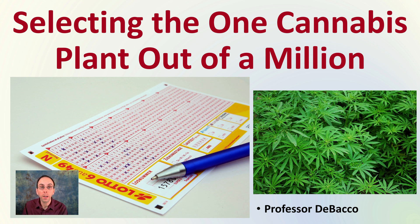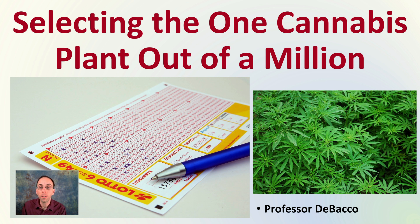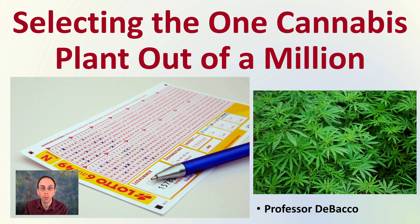Welcome to this Debaco University video. Here we're going to be looking at selecting the one cannabis plant out of a million, kind of like playing the lottery. Finding that one unique individual that would be warranted for going through the process of propagating, cloning, and breeding out further.